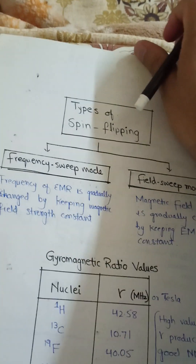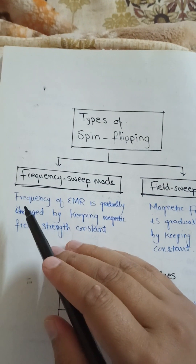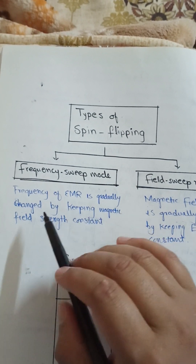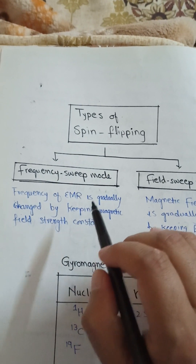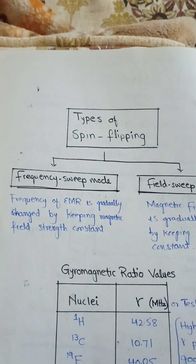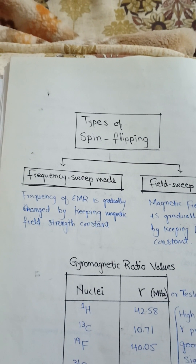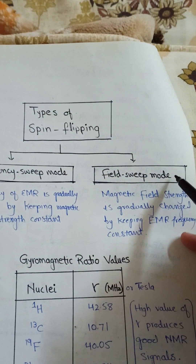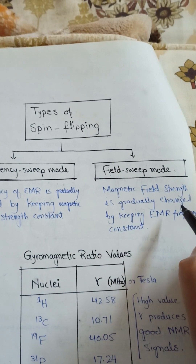There are two types of spin flipping: frequency sweep mode and field sweep mode. In frequency sweep mode, the frequency of electromagnetic radiation is gradually changed while keeping the magnetic field strength constant. In field sweep mode, the strength of the magnetic field is gradually changed while keeping the electromagnetic frequency constant.